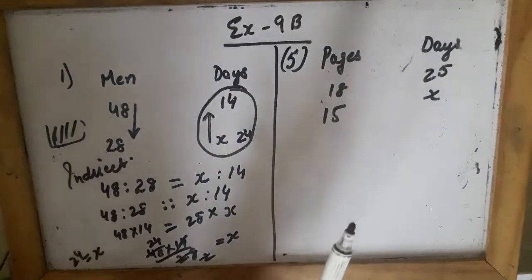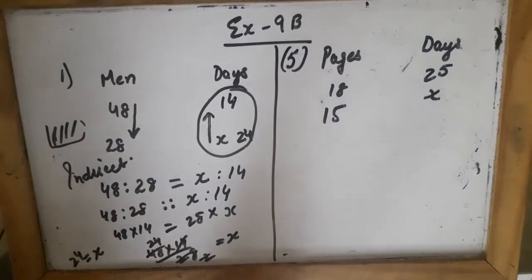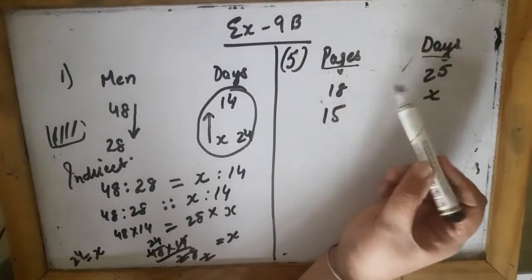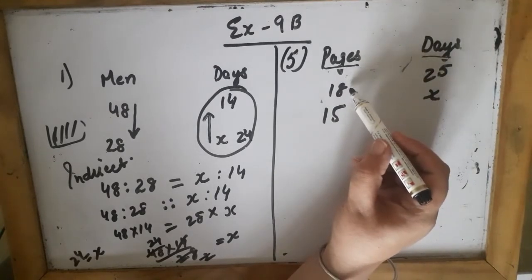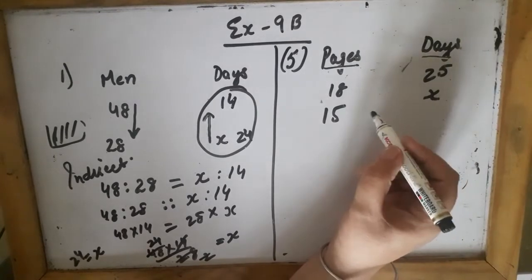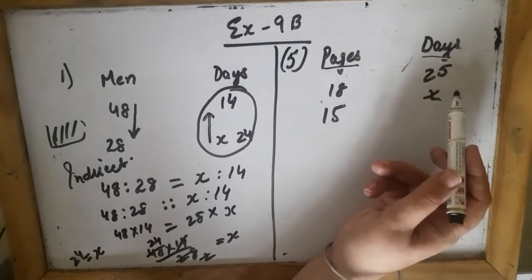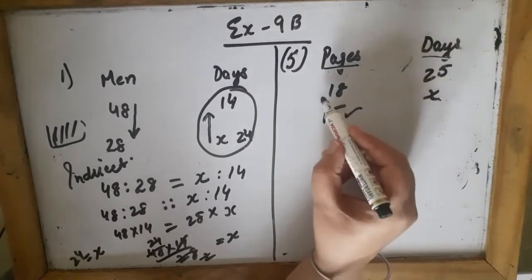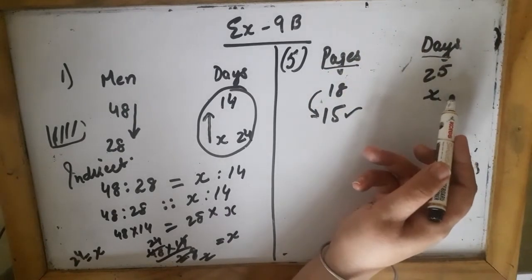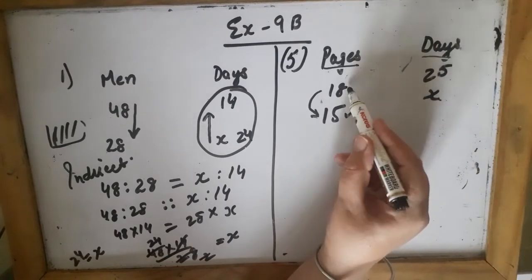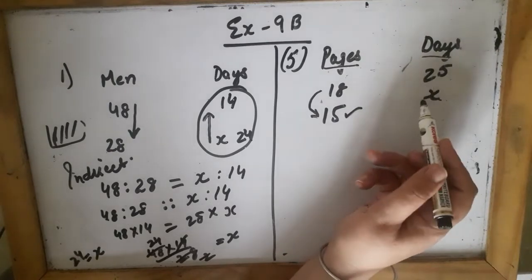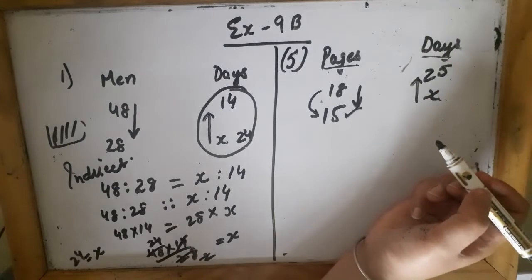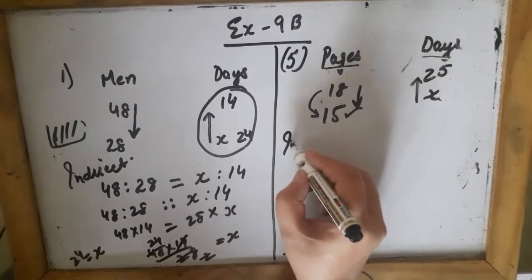Now for the fifth question: a girl can finish a book in 25 days if she reads 18 pages every day. The two things given are pages and number of days. If she reads 18 pages in a day she completes the book in 25 days. How many days will she take if she reads only 15 pages in a day? I will put the variable X on the number of days. If she decreases the number of pages, she will take more time to finish the book — one decreases and the other increases, so this is inverse proportion.